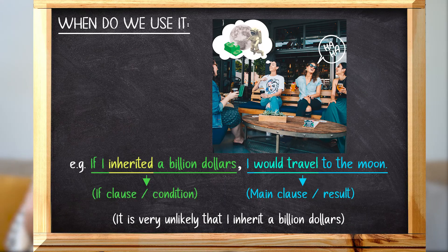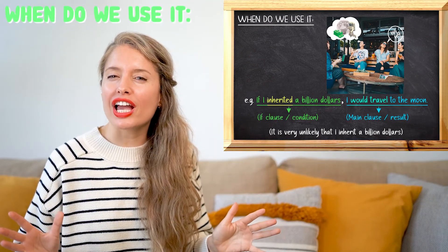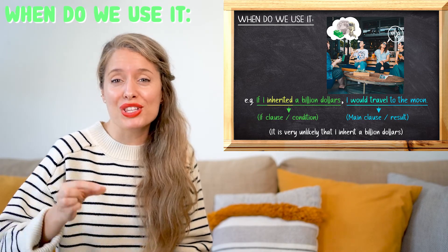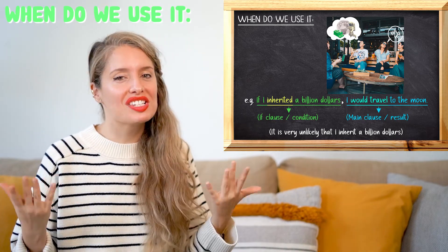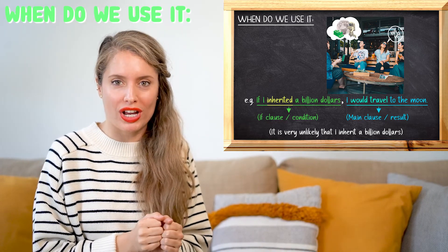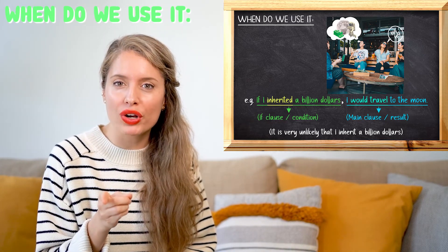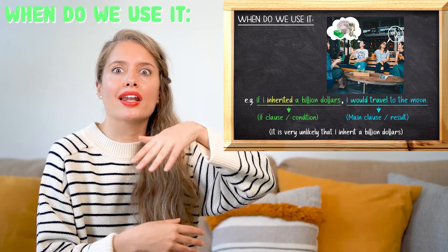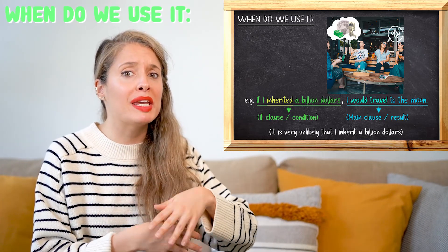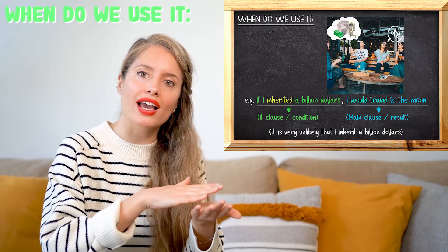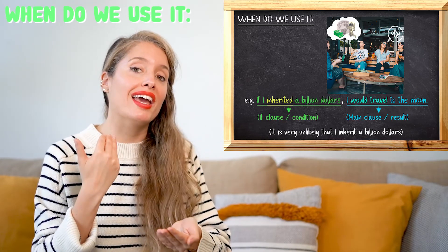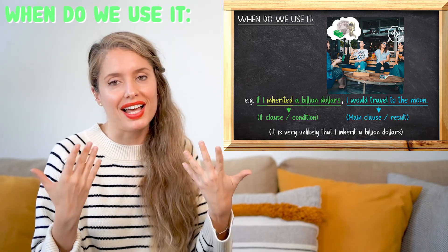'If I inherited a billion dollars, I would travel to the moon.' What are the chances that I, Christina, inherit a billion dollars? Very slim — so again, this is an unlikely situation. In case you're wondering, 'inherit' means — for example — if your grandfather had a lot of money and when he passes away, that money goes to you. So you would inherit that billion dollars.